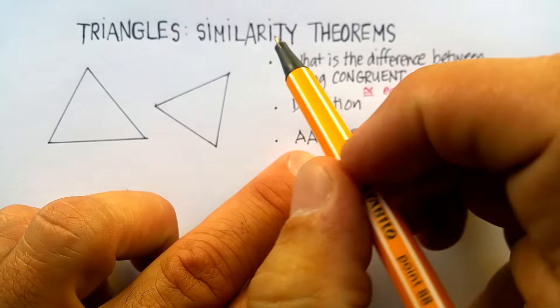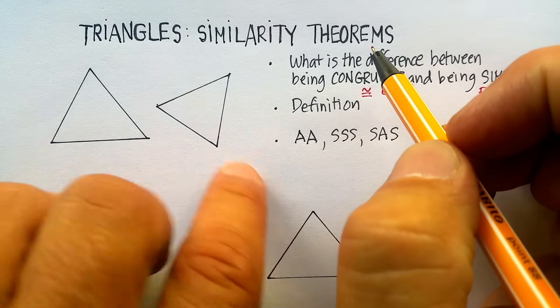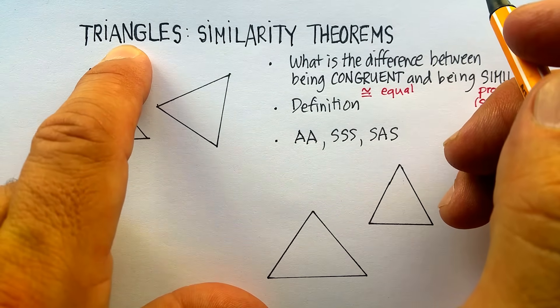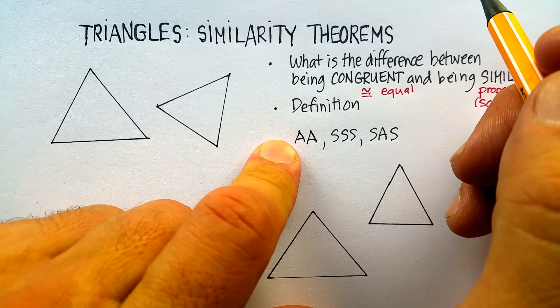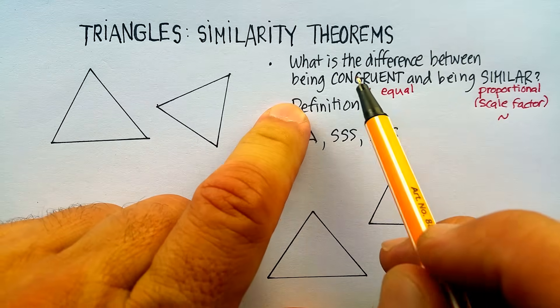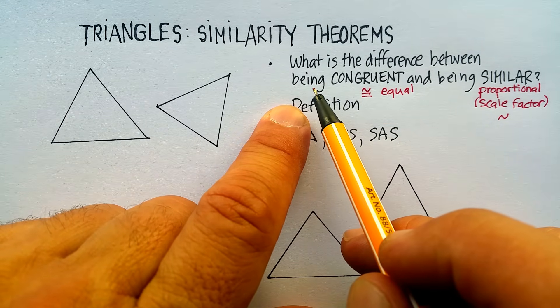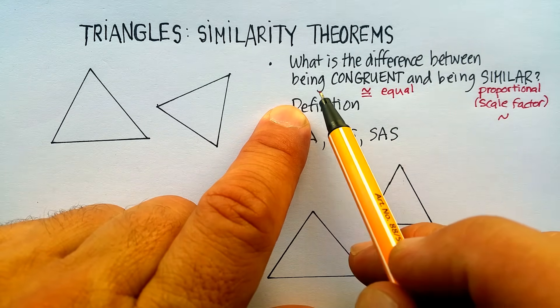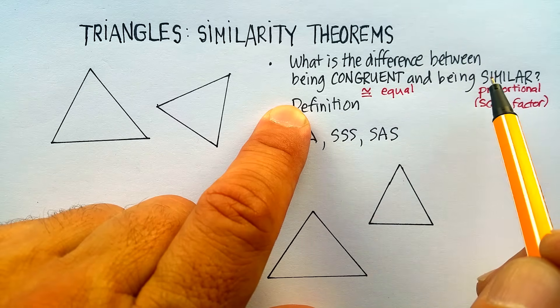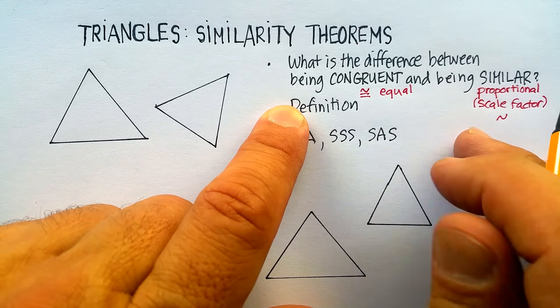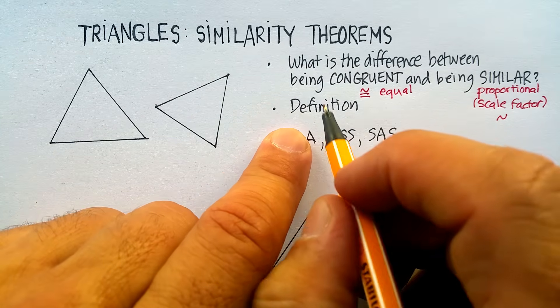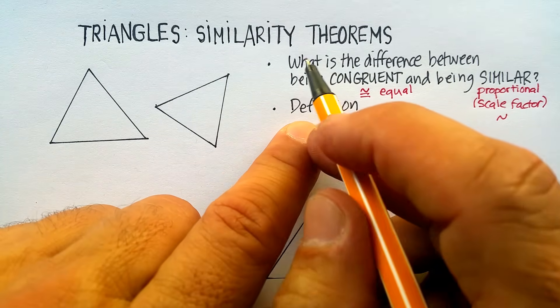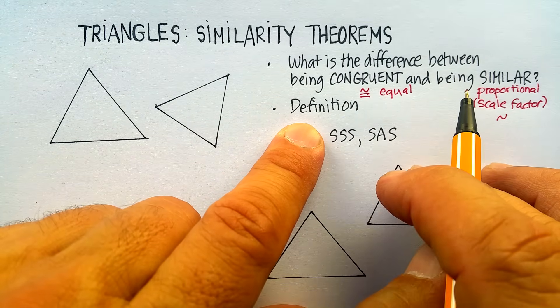In this video we're going to talk about the similarity theorems for triangles. I'd like to go over what's the difference between being congruent and being similar, especially when it relates to triangles. By doing so I'll be able to give you what the definition of similarity is.